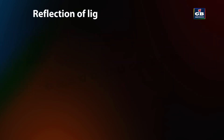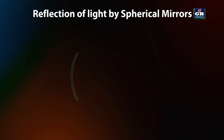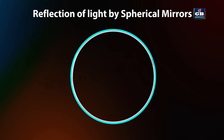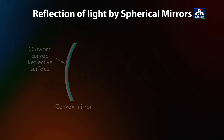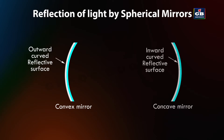Now let us understand the reflection of light by spherical mirrors. A spherical mirror is a curved mirror that forms part of a sphere. Spherical mirrors are of two types: one, convex mirrors, and two, concave mirrors. A convex mirror is a type of spherical mirror that has an outward curved reflective surface.